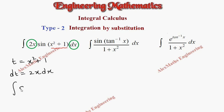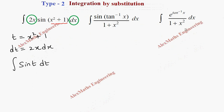Now the question becomes integral of sine(t) dt, where x² + 1 is replaced by t and 2x dx is replaced by dt. We apply the formula: the integration of sine(t) is minus cos(t) plus c.